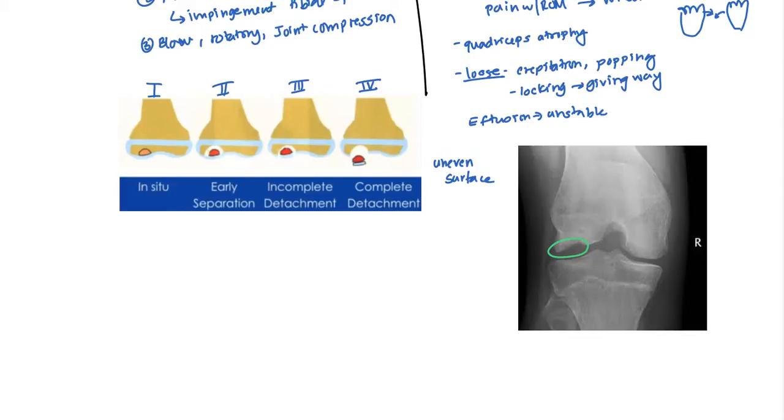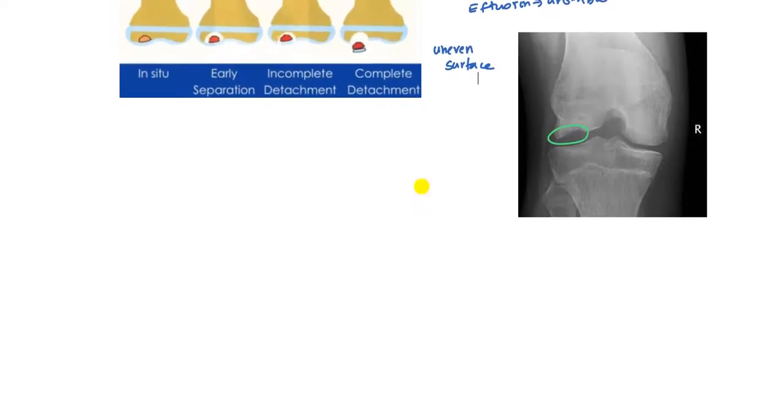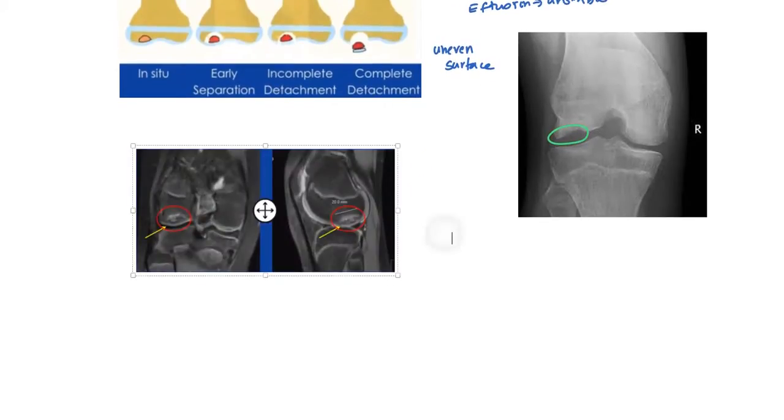This is usually enough to diagnose it, however you do need to do an MRI to look at the severity. Here's two MRIs, one lateral and one sagittal. You can see it's separated here, showing this is a complete detachment. For purposes of staging and checking the severity, you need to do this as well.